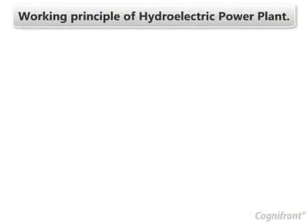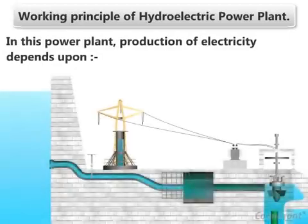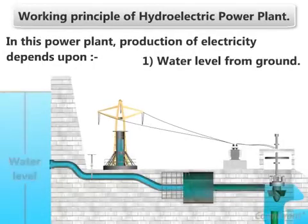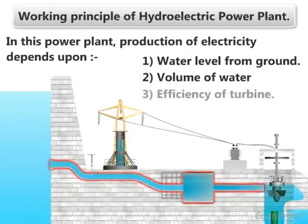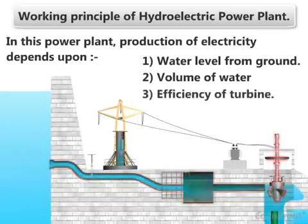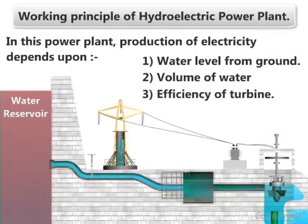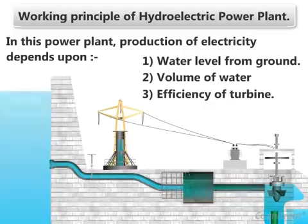The working principle of a hydroelectric power plant: in this power plant, production of electricity depends upon the height of the water from ground level, the volume of water flowing per unit time, and the efficiency of the turbines.